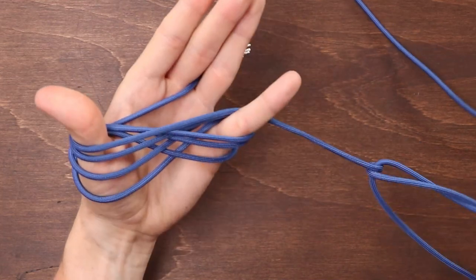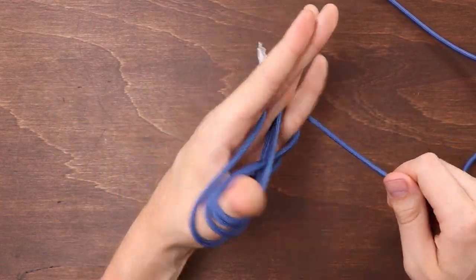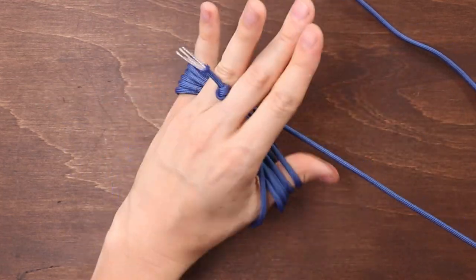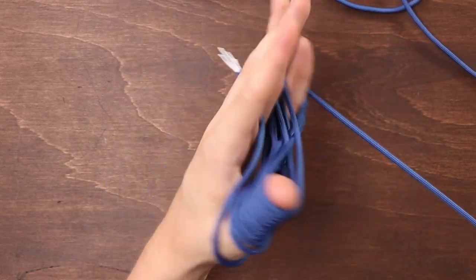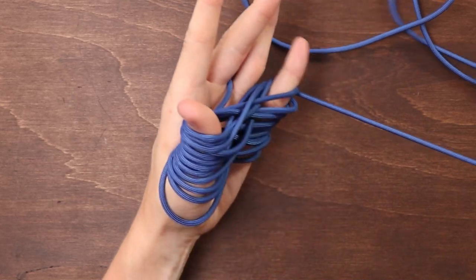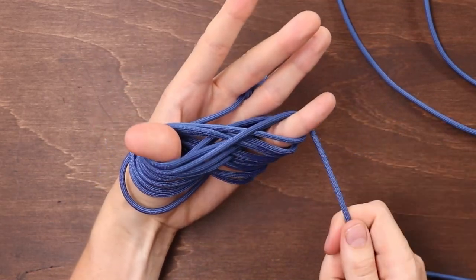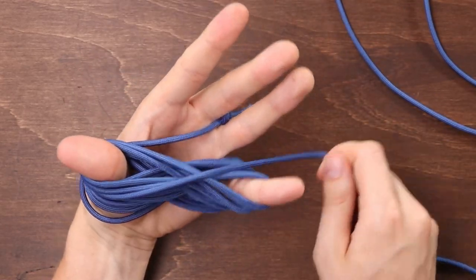I like to just move my left hand, the one with the paracord, instead of moving my right hand. I find that I can wrap it a lot faster that way. And just a reminder, all we're doing here is over the thumb, over the pinky.